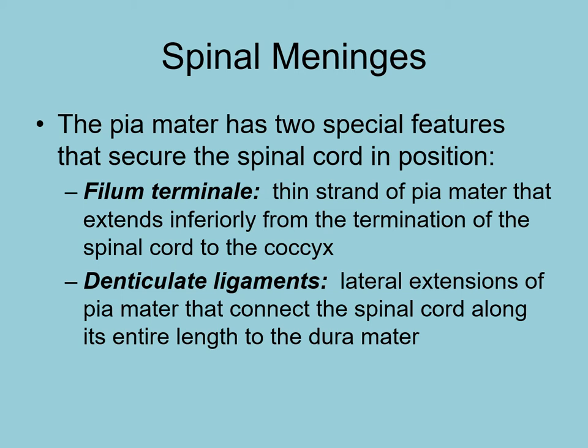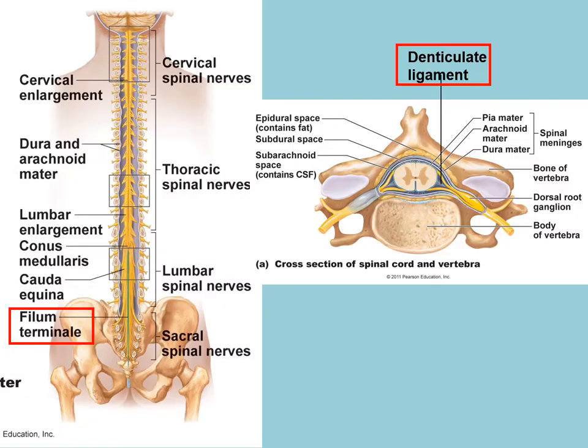The pia mater has two special features that help attach it to the spinal cord to keep it from sliding around. The filum terminale is a thin strand of pia mater that extends inferiorly from the termination of the spinal cord down to the coccyx. The denticulate ligaments are lateral extensions along the pia mater that connect the spinal cord throughout its entire length to the dura mater, keeping it from sliding around.